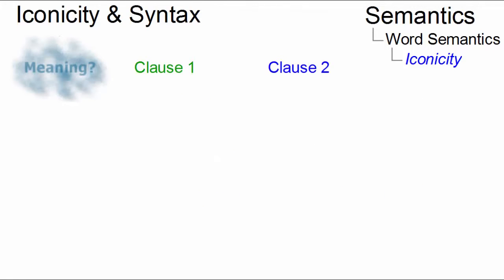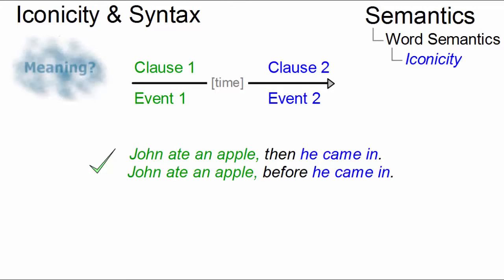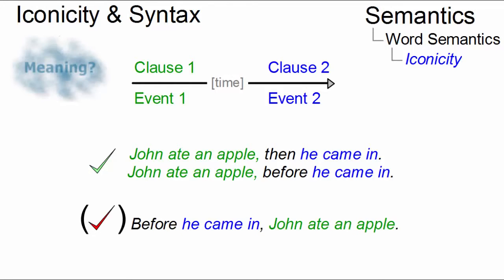And in syntax, causal order often mimics the natural order of ideas. Thus, sentences are easier to process if their causal order is in line with the natural order of events than those where the causal order is different.